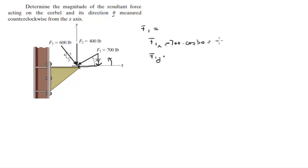And that is equal to negative 606.2. And the y is 700 sine of 30, and it's going down so it's negative, and that gives us negative 350. So the Cartesian vector form is negative 606.2i minus 350j.